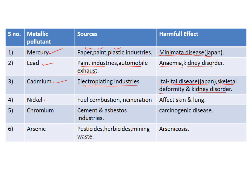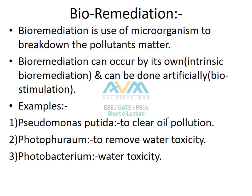Nickel originates from combustion of fuel and incineration, causing skin diseases and lung disorders. Chromium originates from cement and asbestos industries and can cause carcinogenic diseases. Arsenic originates from pesticide and herbicide industries and mining waste, and exposure causes arsenicosis.